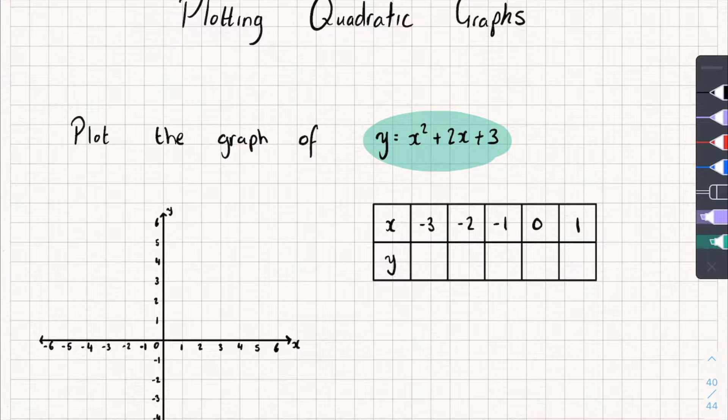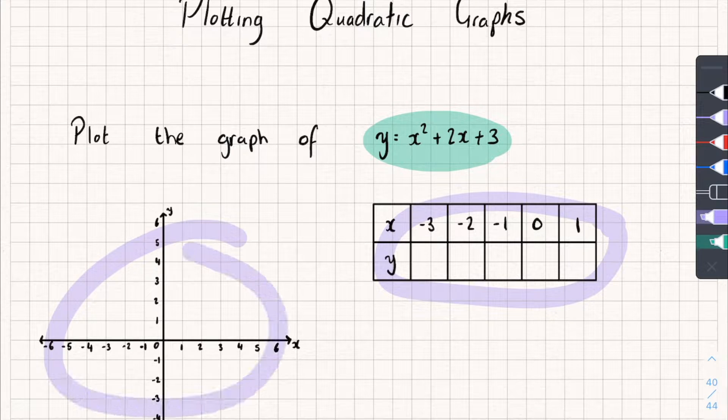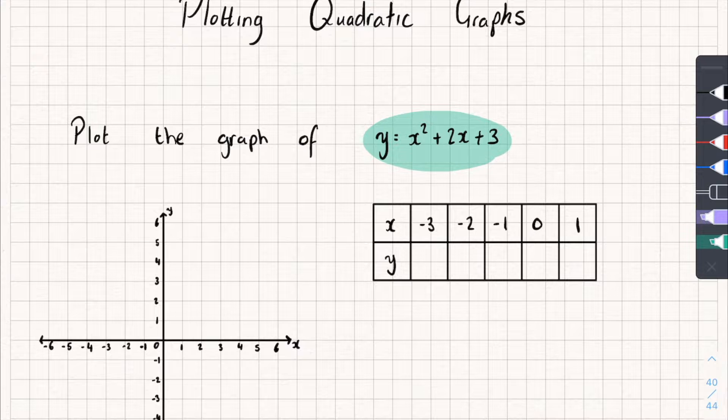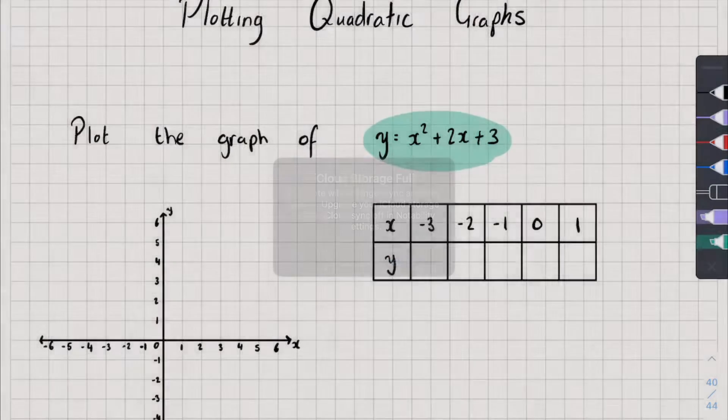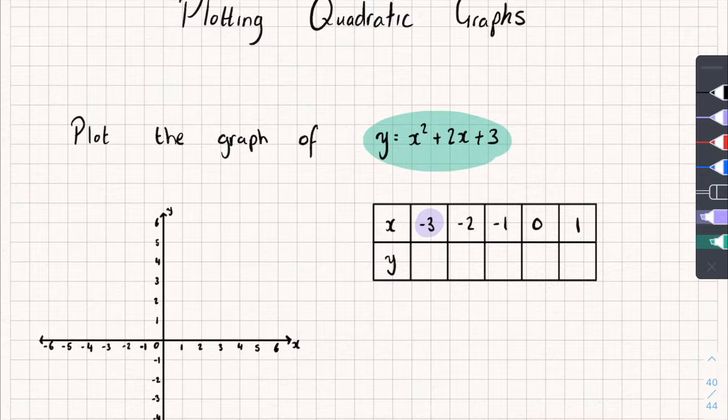We've got y equals x squared plus 2x plus 3. Now in these questions you'll usually be given a table and a graph. Or you'd have to draw it yourself. But the best way to do it is always start with your table. And you can see here this table goes from x equals negative 3 all the way up to x equals 1. And what we're going to do is put these values of x one by one into our quadratic equation and see what value of y comes out.